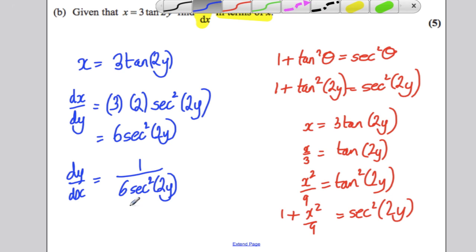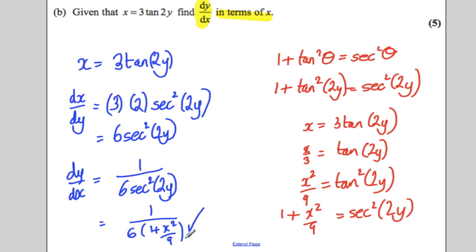So we could just substitute in here and this would be 1 over 6 times (1 plus x squared over 9). And that's it. You're done. Simple as that.